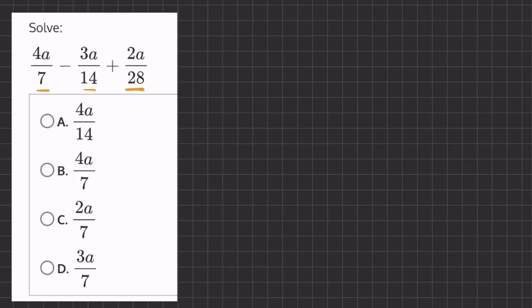So if we take our first fraction, 4a over 7, and if we multiply the numerator and denominator by 4, we will get 16a over 28.